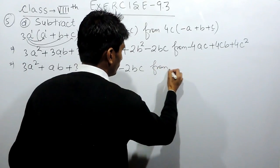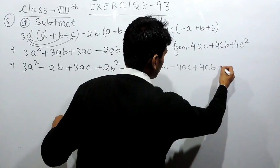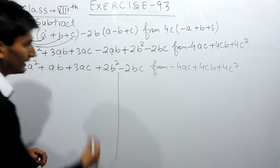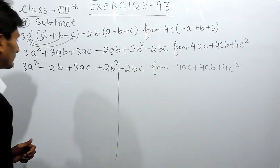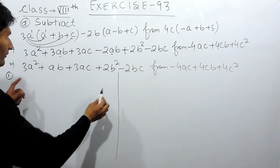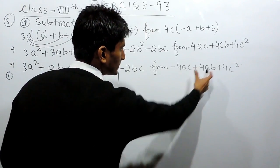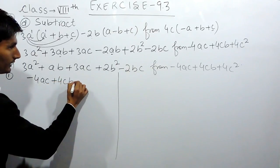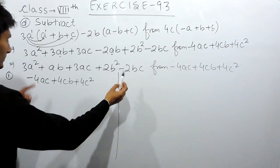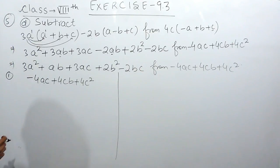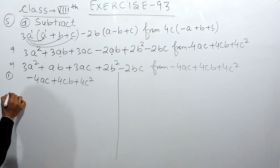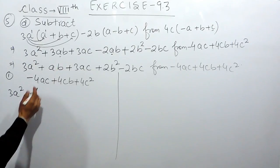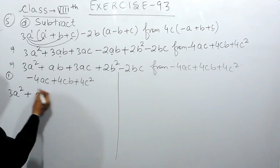And this has to be subtracted from minus 4ac plus 4cb plus 4c square. There are two ways of solving this — you can write these horizontally, or you can write this vertically. Let's solve the vertical case first. When you have to subtract this from this, it's better to write this first: minus 4ac plus 4cb plus 4c square, and then write the second expression below it, aligning like terms under like terms. So 3a square is written separately as there is no like term to it, and ab will be written separately.